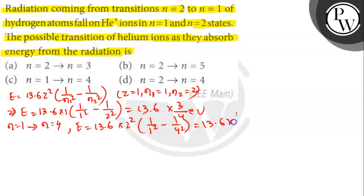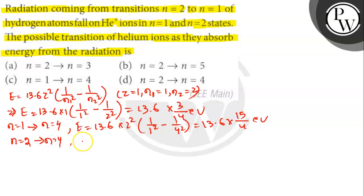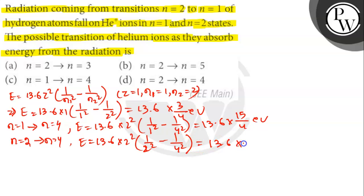That gives 13.6 × 15/4 eV, which is not equal to that of the hydrogen atom, so this is not the right answer. In the second case, N=2 to N=4: E = 13.6 × 2² × (1/2² − 1/4²) = 13.6 × 3/4 eV. This matches the hydrogen energy, so this could be the answer.